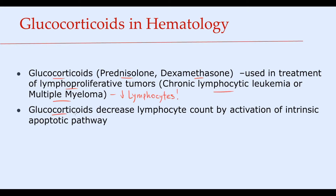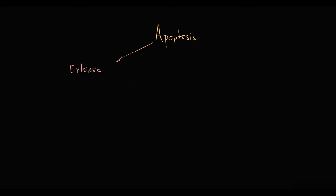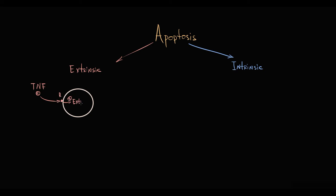They decrease lymphocyte count by activation of the intrinsic apoptotic pathway. Recall that generally there are two apoptotic pathways: the extrinsic apoptotic pathway and the intrinsic apoptotic pathway. The extrinsic apoptotic pathway is activated when ligands such as tumor necrosis factor bind to a cellular receptor located on the outer cellular membrane, and this initiates the extrinsic apoptotic pathway.